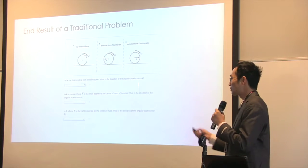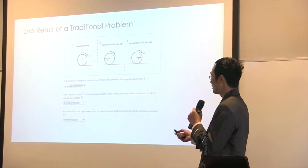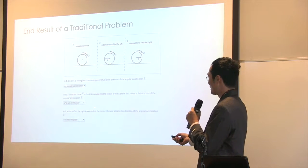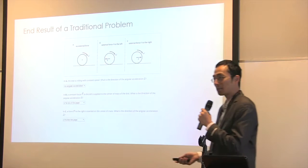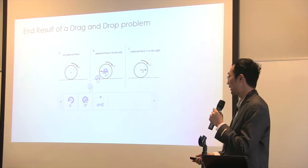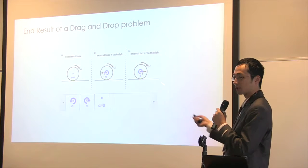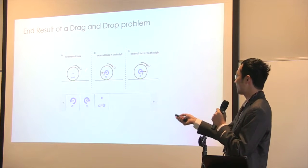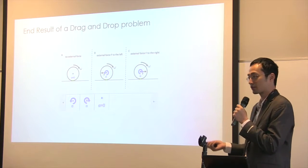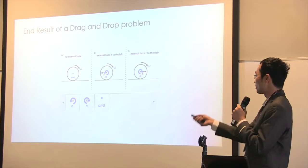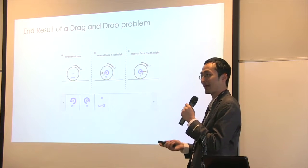This is one of the problems we use in our course. It asks about the direction of angular acceleration. When you finish a drop-down list problem, you get text like 'alpha is out of the page for B' — a pretty terrible thing to remember. But if you do a drag-and-drop version, your end result is a picture of how angular acceleration relates to the direction of force and rotation. According to cognitive theory, a visual memory of this is closer to the conceptual understanding itself compared to a language description.